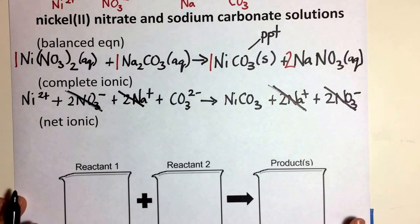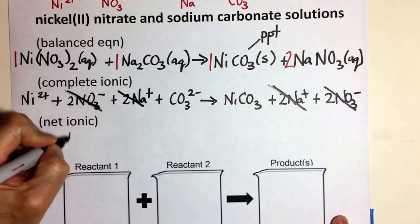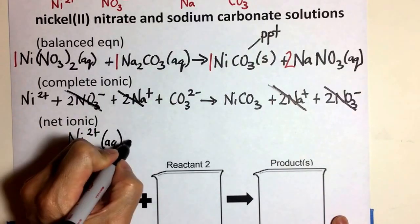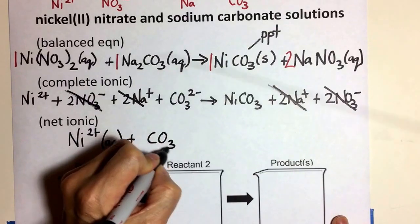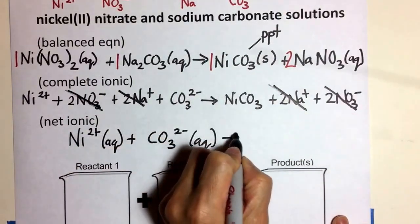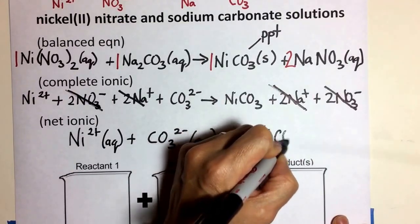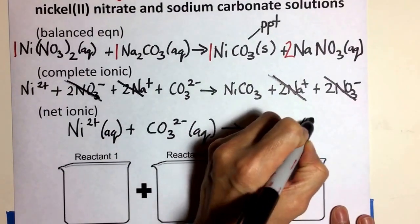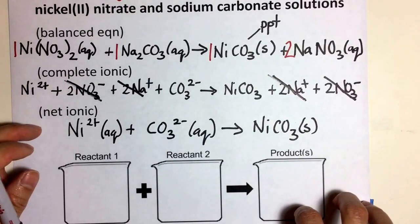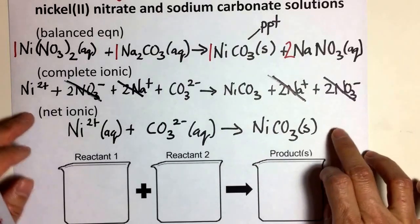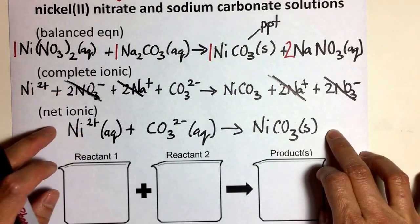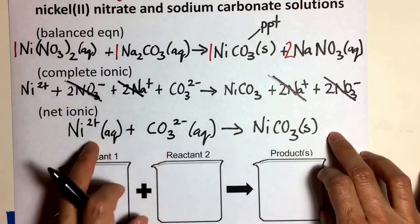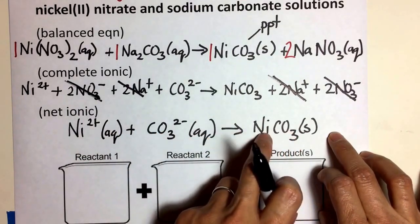The net is just rewriting everything that's left over. So nickel two plus — since it's a dissolved ion, I put it as an aqueous state of matter — and carbonate is also aqueous, forming my precipitate. This is your driving force, and these are all the ions that make up that driving force. What you have in the net ionic equation is all the species involved in the chemical change — that's why it's called the net. Once all the spectator ions are eliminated, you have all the species or ions that make up that precipitate.